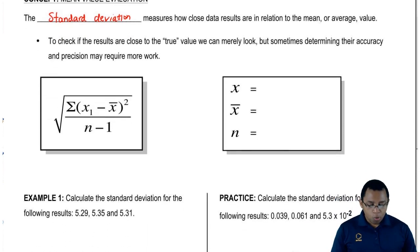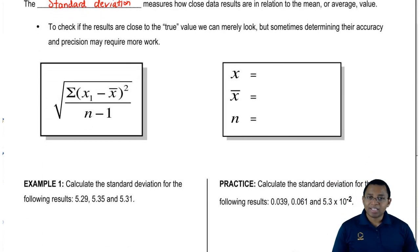The equation for standard deviation is the square root where we have the summation (this is sigma), so the summation of (x₁ minus x̄)² divided by (n minus 1).